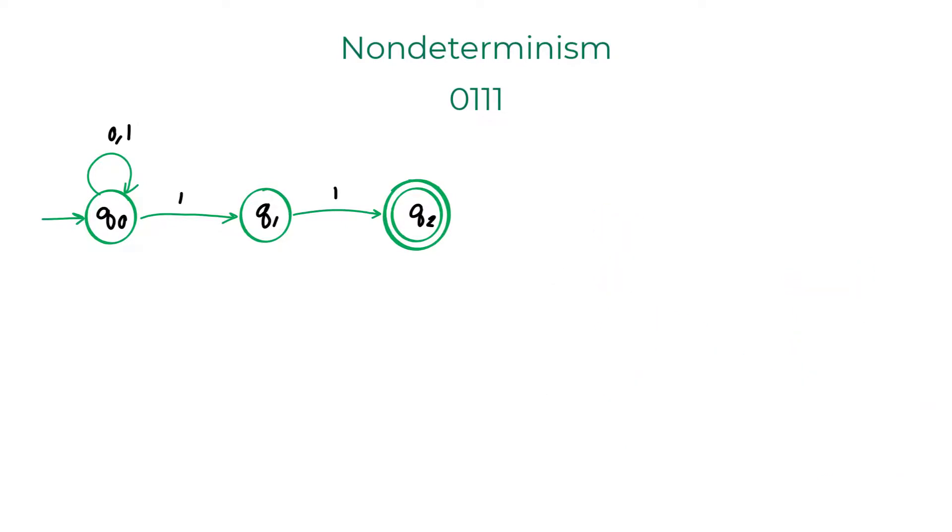When this NFA reads character 0, it will still be in Q0. When it reads 1, it will be in Q0 as well as Q1.